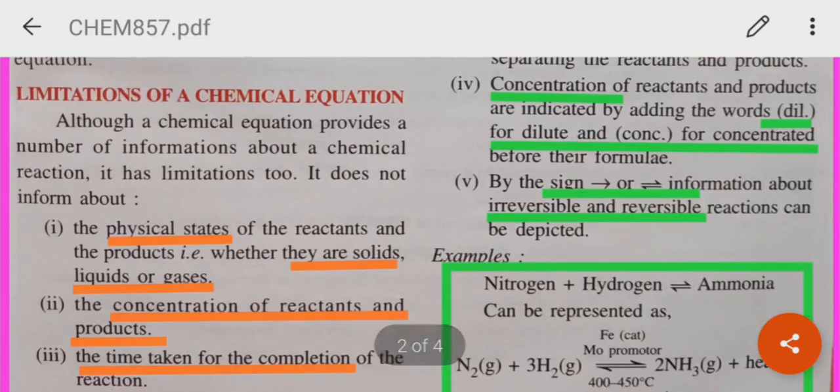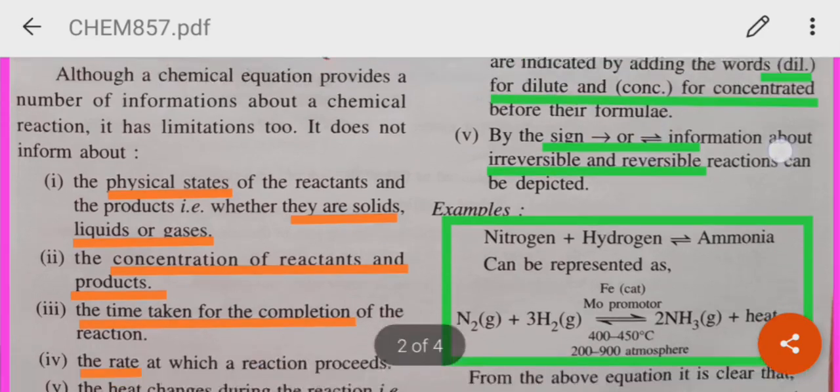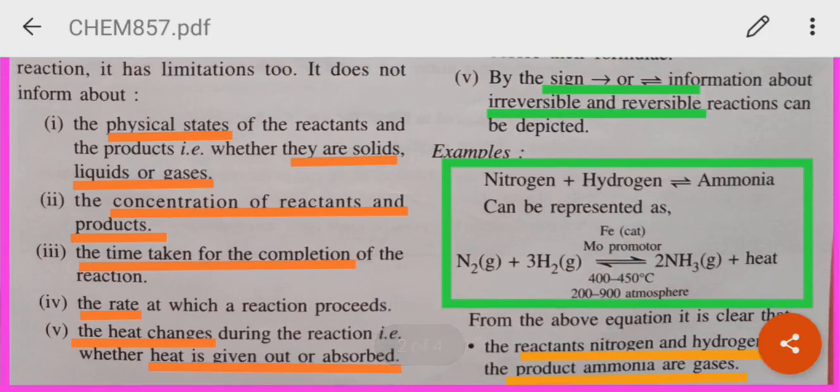By the sign arrow, or you can see this is the sign of reversibility, which informs whether the reaction is irreversible. If there is only one arrow, the reaction is irreversible. If there are arrows pointing in both the directions, it shows that the reaction is reversible. Let us take an example.